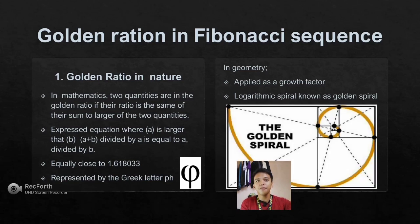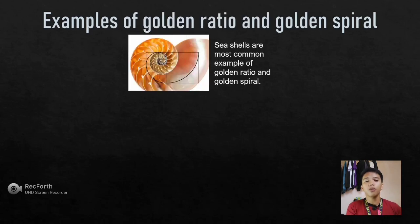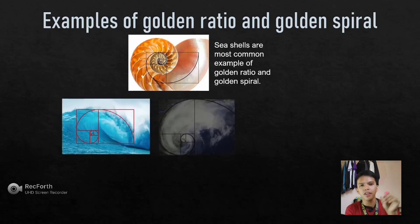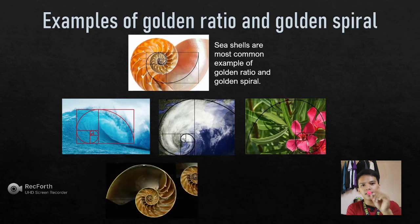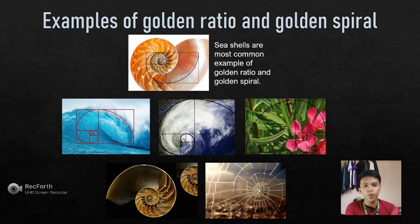Seashells are among the most common examples of the golden ratio and golden spiral, because the outline and shape of the shell — from its point until it widens — resembles a golden spiral. These photos illustrate naturally occurring examples of the golden ratio and golden spiral.